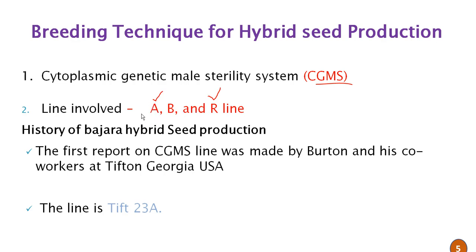The A line is the male sterile line, the B line is the maintainer line or polarizer line, and these two are isogenic. The R line is the restorer line, which restores the fertility of the A line and is also utilized as the male parent. This is the three-line system used in hybrid seed production of pearl millet.